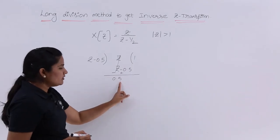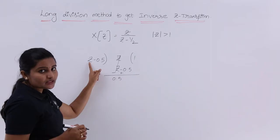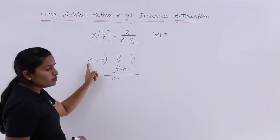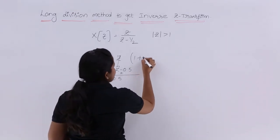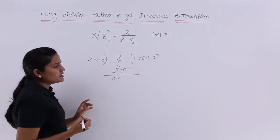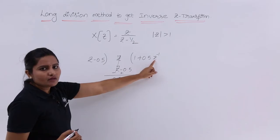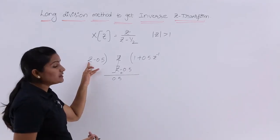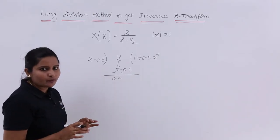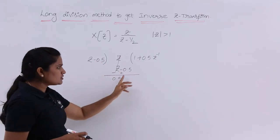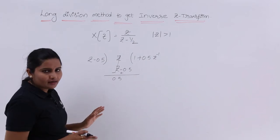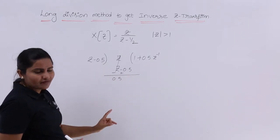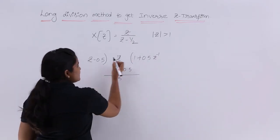Keep in mind this important point: we need to get rid of 0.5 using Z only. So we multiply by 0.5 Z inverse — because Z into Z inverse will vanish and the remaining is 0.5. We need to make every step by taking reference of the maximum power of Z. So you need to take reference of Z every time. If we consider 0.5 Z inverse, then Z multiplied by 0.5 Z inverse gives 0.5.